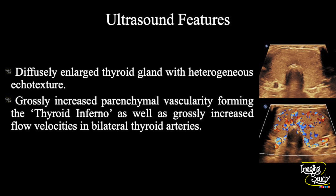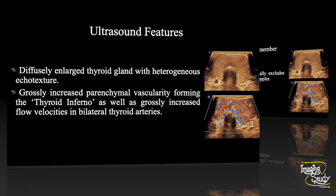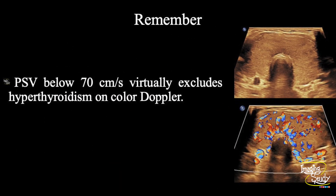In summary, the thyroid gland is diffusely enlarged with heterogeneous echotexture. The parenchymal vascularity is grossly increased, forming the thyroid inferno. The velocities of the superior and inferior thyroid arteries bilaterally are grossly increased. These sonological and Doppler features conclude this as a case of hyperthyroidism. The take-home message: a peak systolic velocity below 70 cm/s virtually excludes hyperthyroidism on color Doppler — that range is actually characteristic of thyroiditis.